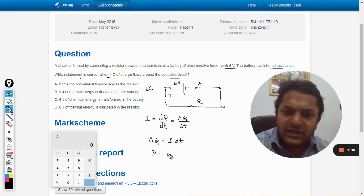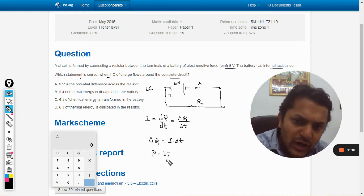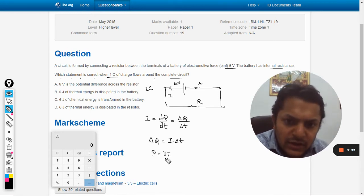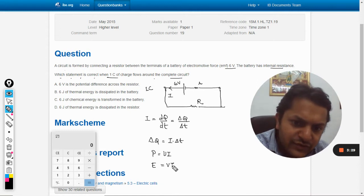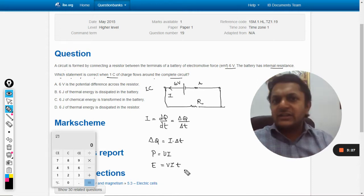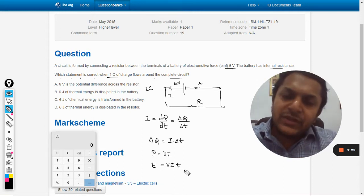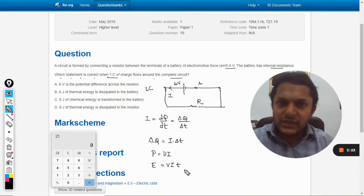If we see, V into I, fine. And if we want to find the total energy that was used, we need to multiply it with the time for which the charge has flown, the current has flown. So it is VIt.